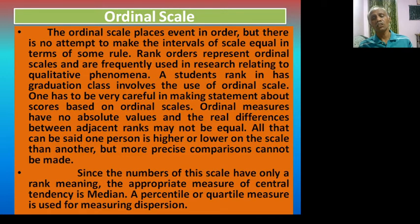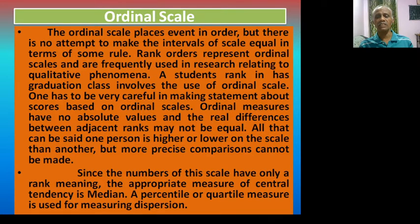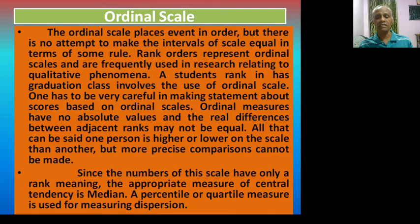The ordinal scale places events in order, but there is no attempt to make the intervals of the scale equal in terms of some rule. Rank orders represent ordinal scales and are frequently used in research relating to qualitative phenomena. A student's rank in a graduation class involves the use of an ordinal scale. Ordinal measures have no absolute values, and the real differences between adjacent ranks may not be equal. All that can be said is that one person is higher or lower on the scale than another, but more precise comparisons cannot be made. Since the numbers have only rank meaning, the appropriate measure of central tendency is the median, and a percentile or quartile measure is used for measuring dispersion.